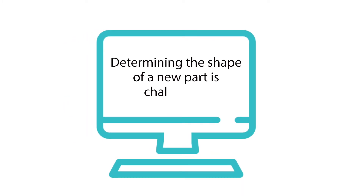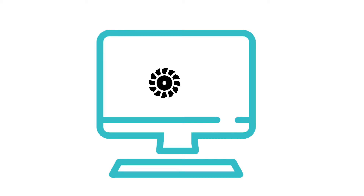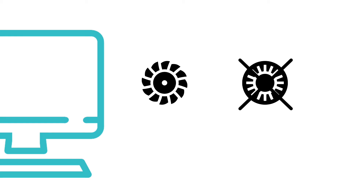Determining the shape of a new part is challenging. Many times, designers start new designs simply based on existing designs. They might take a part and try to remove or add materials simply by tweaking the existing features and dimensions. This means that newer design concepts are never considered, and modifying an existing part might actually create an over-designed part for a particular application.